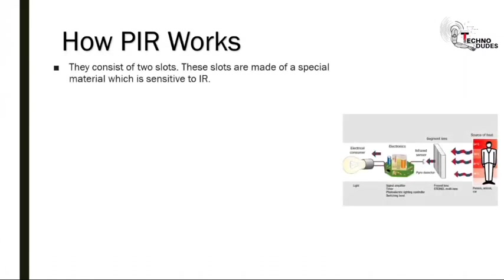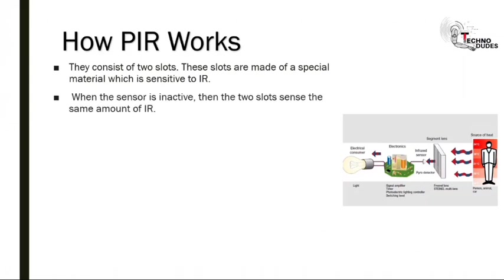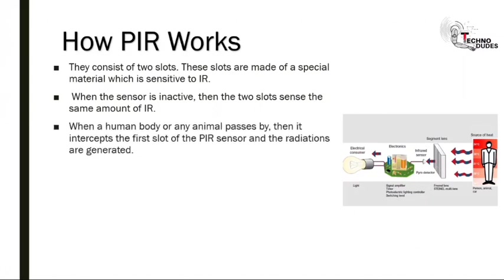PIR sensors consist of two slots made of a special material sensitive to IR. This is why the PIR is more complicated than other sensors. When the sensor is inactive, both slots sense the same amount of IR. When a human body or animal passes by, it intercepts the first slot of the PIR sensor and radiation is generated.